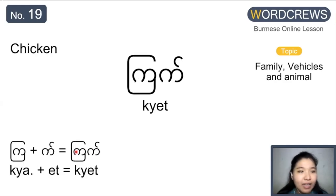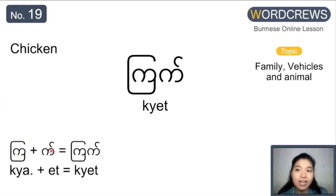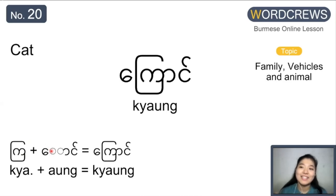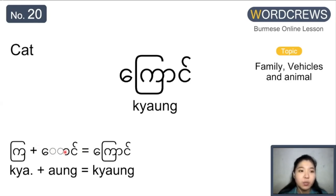Next one is chicken. Chicken is jet. It's the ga alphabet and then the jet consonant symbol, so it's jet. And then the at consonant symbol — we combine it: jet. Next one is cat. Cat is jaw. Similarly with jet, the first word you see is jet-like, and then the aw symbol. So jaw.